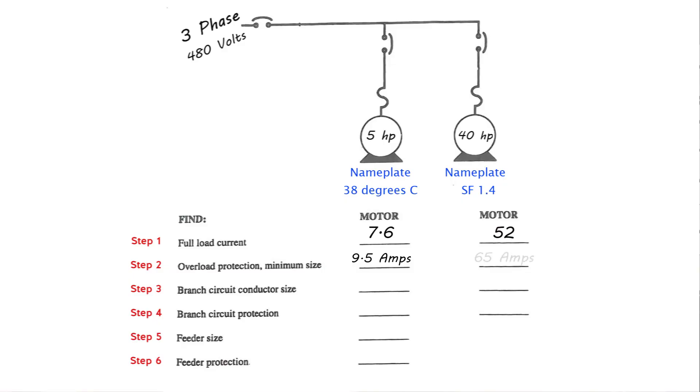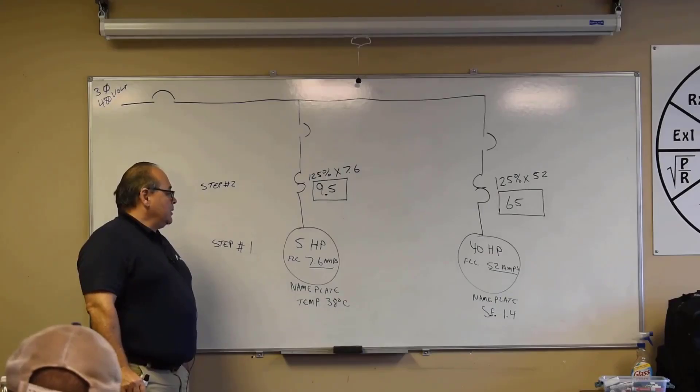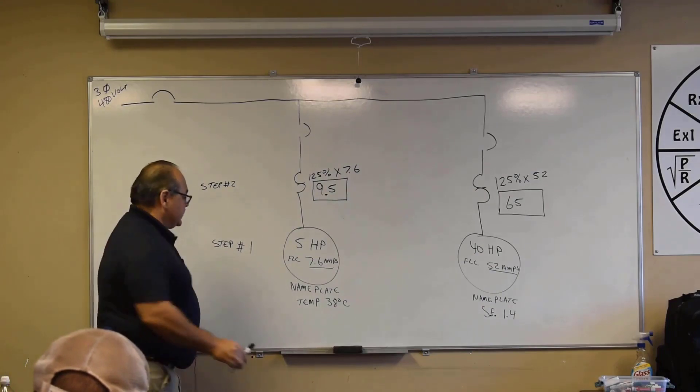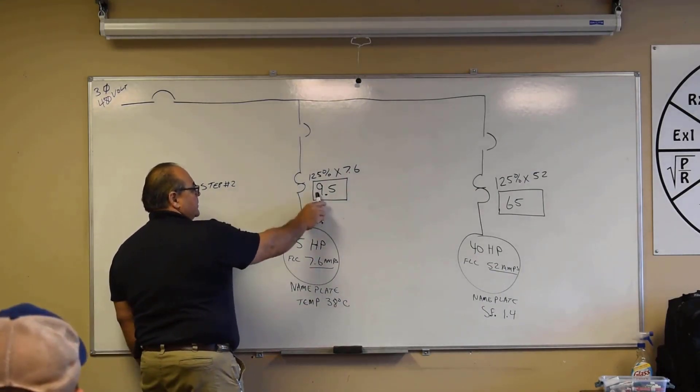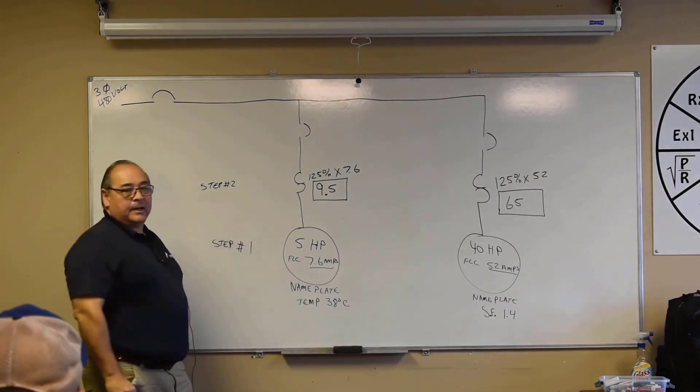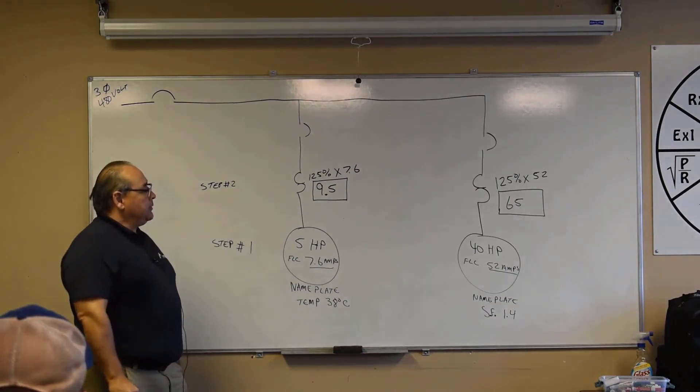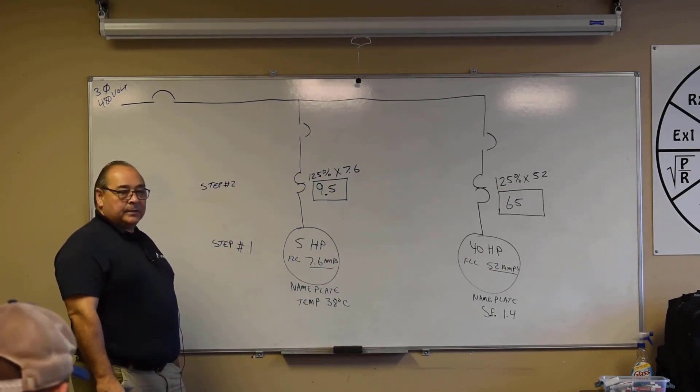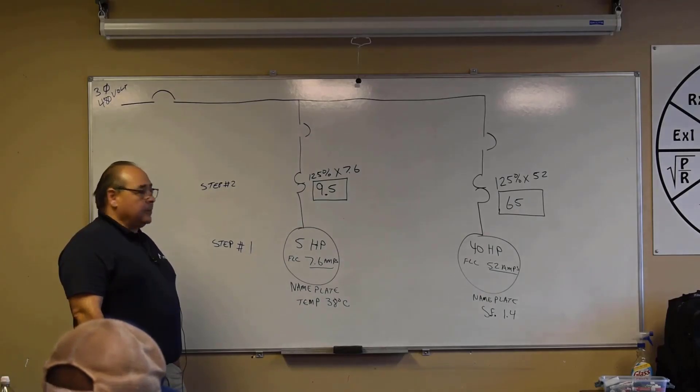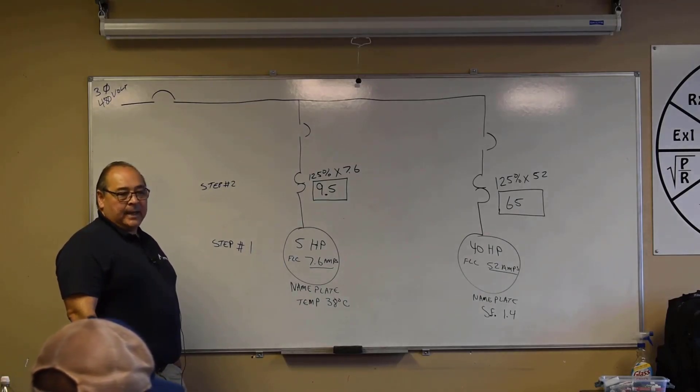Okay, that's step number two. So what we can look at, just kind of get our point of reference, we got a 7.6 amp motor, a full load current, it's going to trip once it gets to 9.5. We got a 52 amp motor over there, it's going to trip once it gets to 65 amps. I tell people all the time about motors, motors are dumb. There is no intelligence to a motor. A motor will run until it burns itself out. We have to provide the intelligence for it, right? We have to provide the protection for it. A motor will just run and run and run.